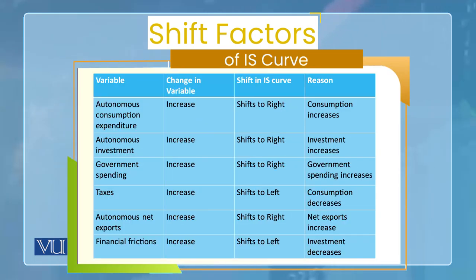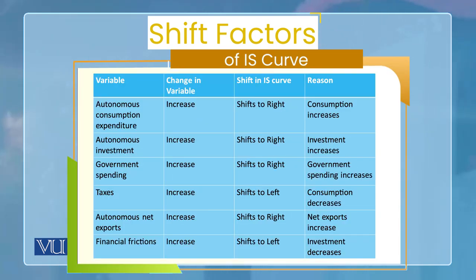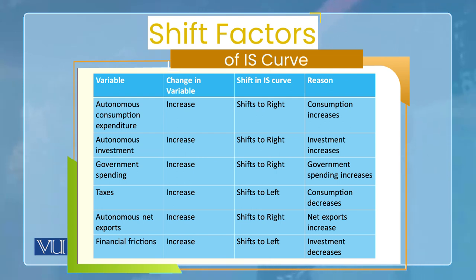Now that we know the IS curve can shift right or left — rightward meaning output increased at a given interest rate, and leftward meaning output decreased — we will discuss all the factors that can shift IS in a summary table. The table lists each variable, the type of change (increase or decrease), which direction IS shifts, and the reason.